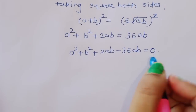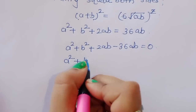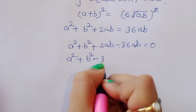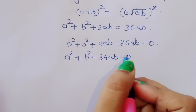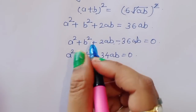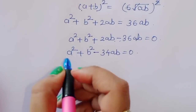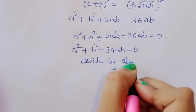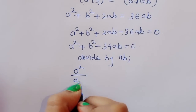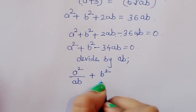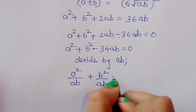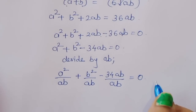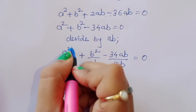Now we can write: a squared plus b squared plus 2ab minus 36ab is equal to 0, which simplifies to a squared plus b squared minus 34ab is equal to 0. Now we can divide through by ab.